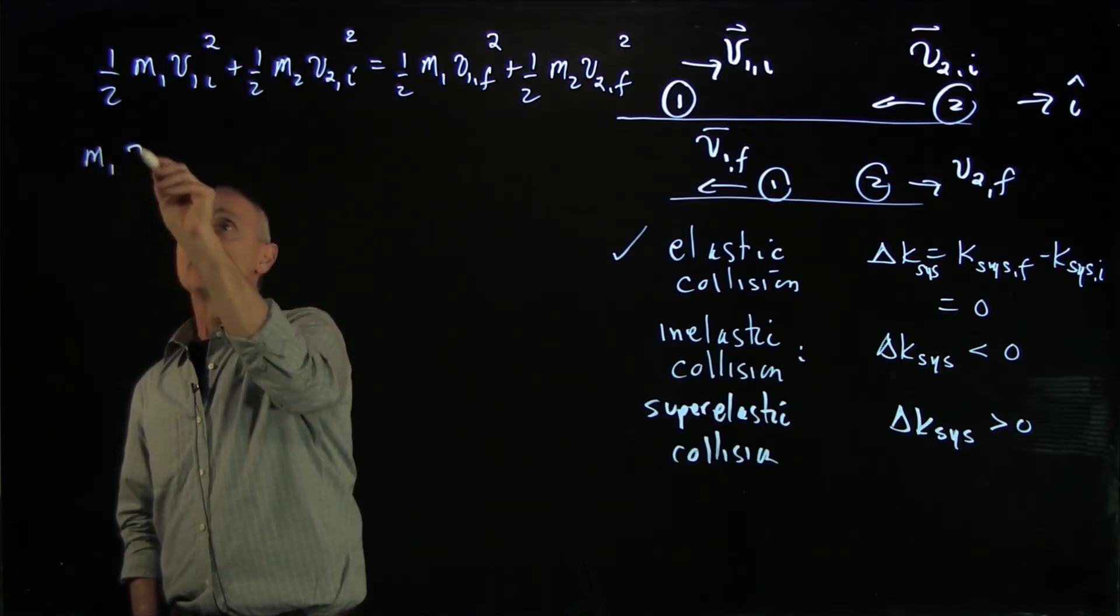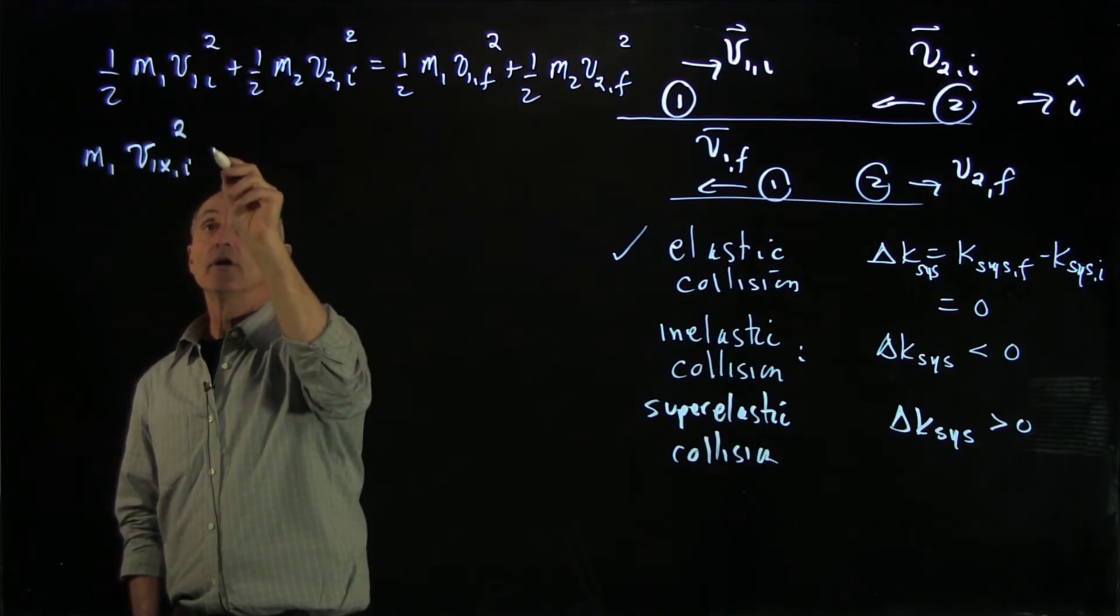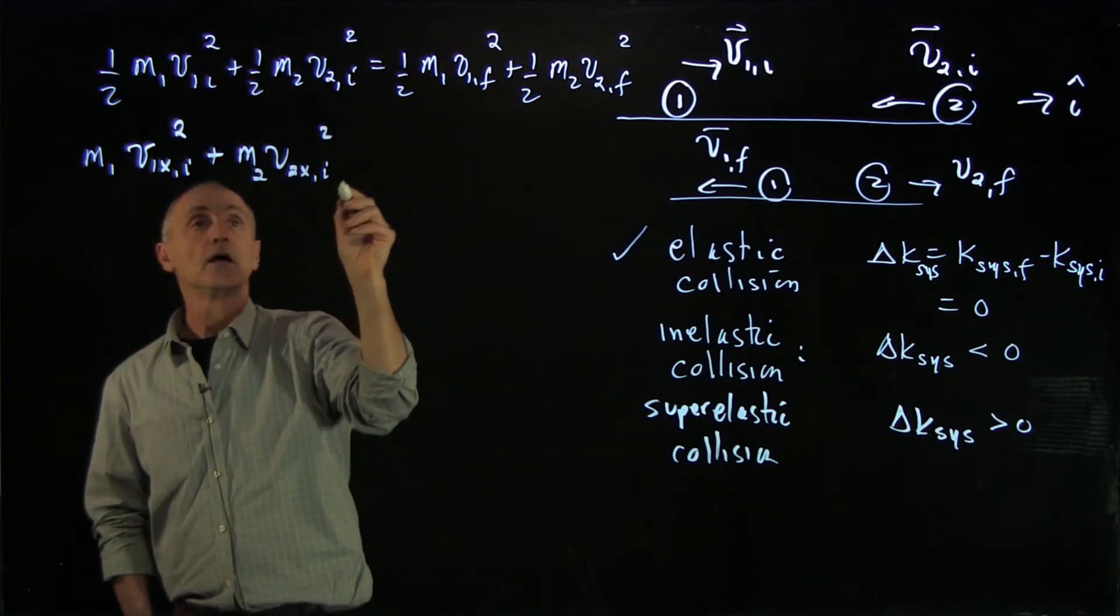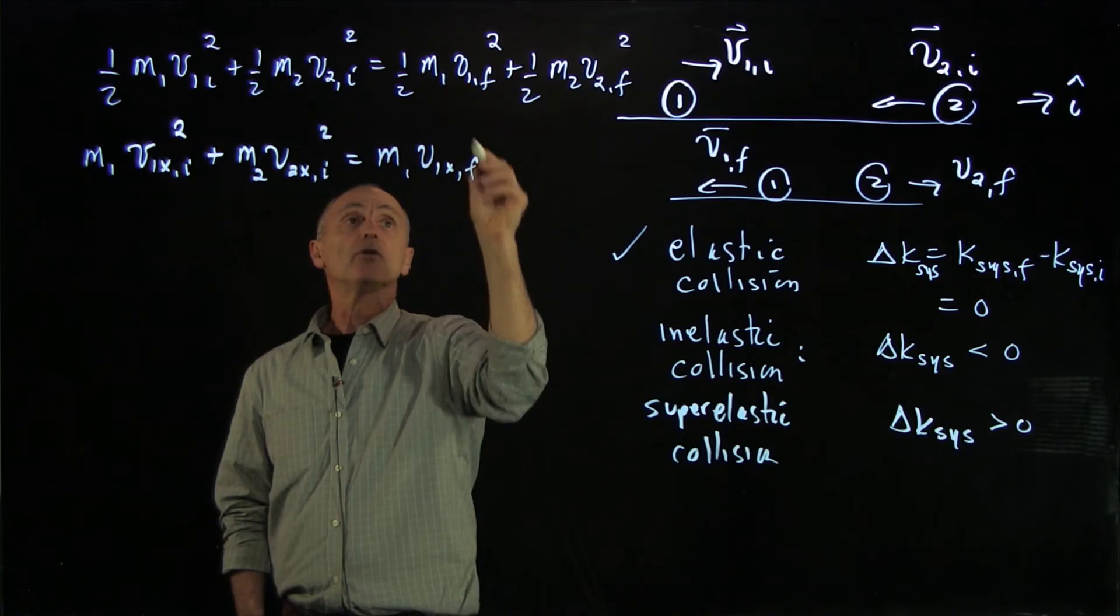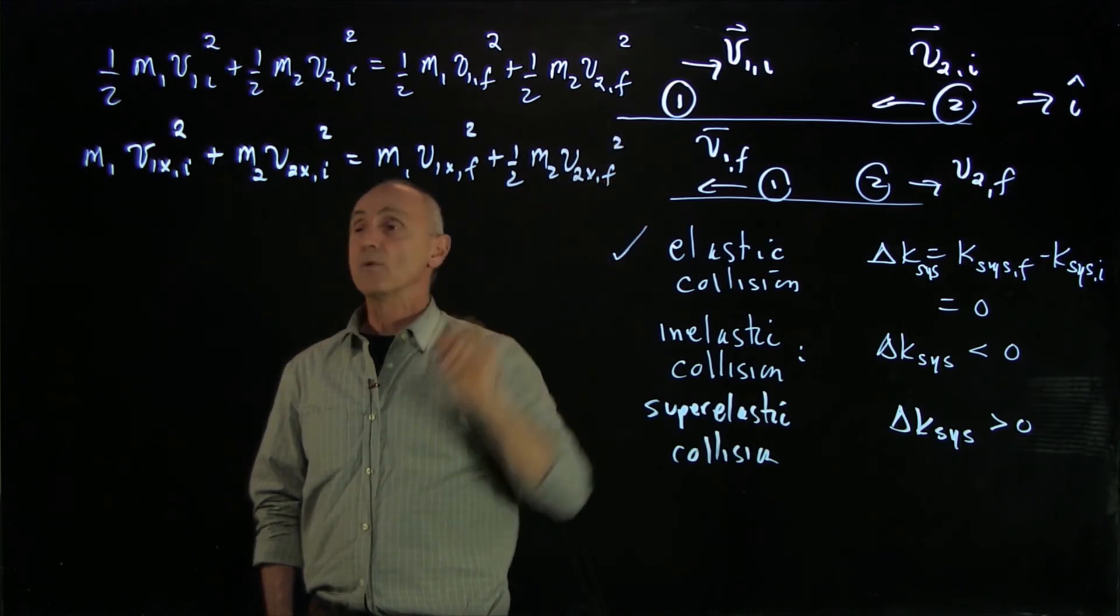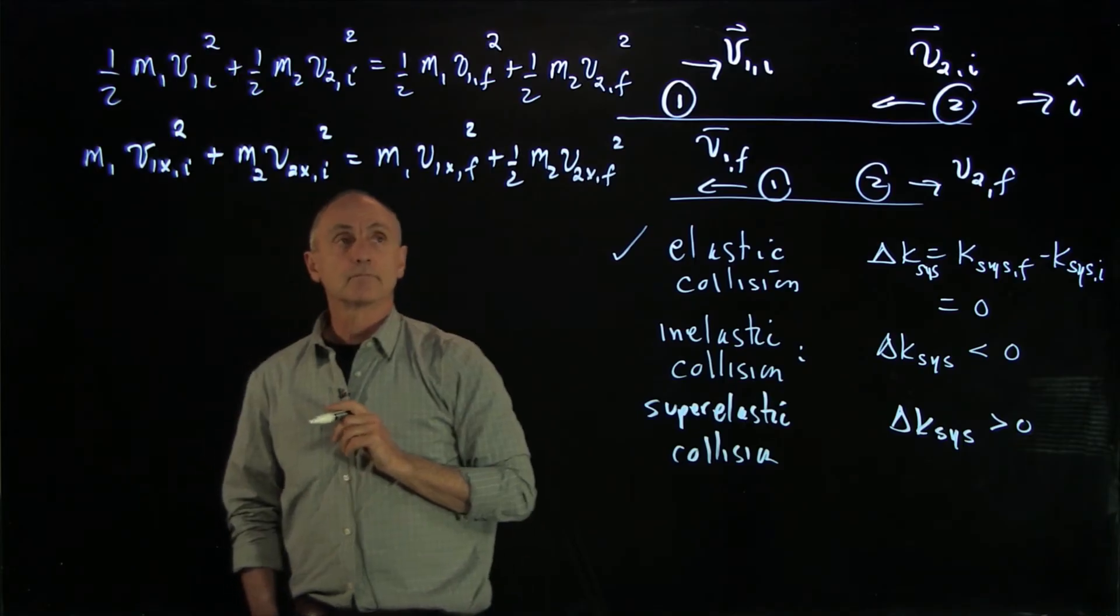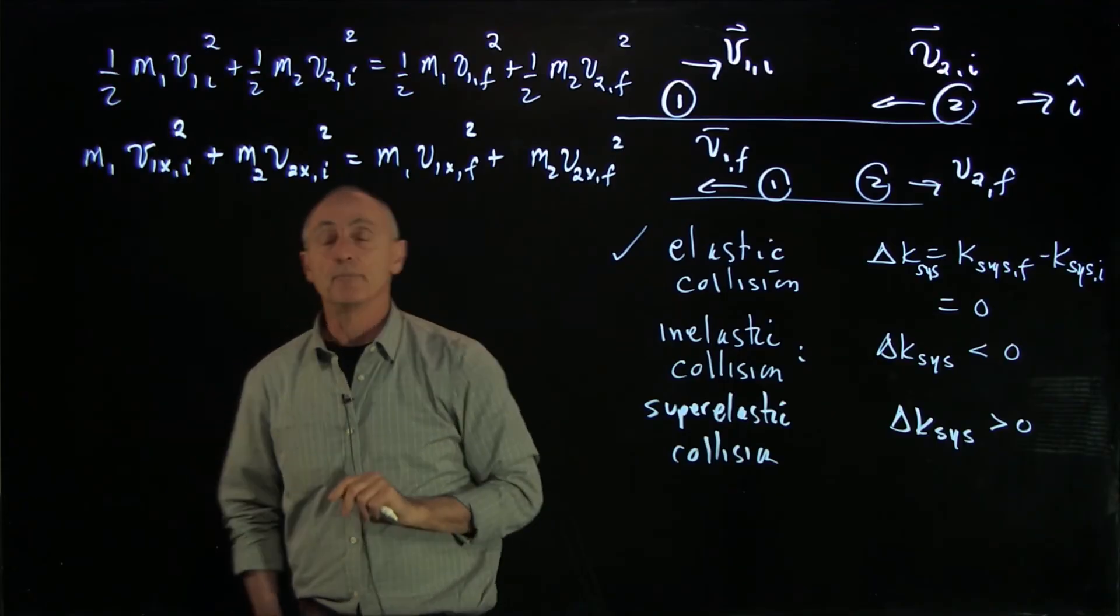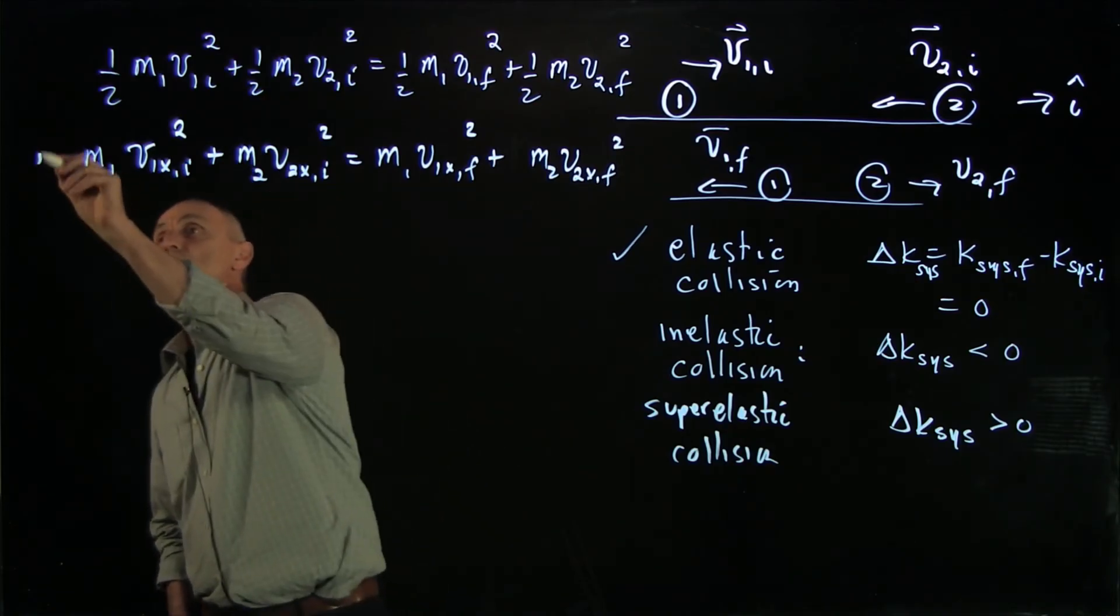We write m₁v₁ₓ² initial plus m₂v₂ₓ² initial equals m₁v₁ₓ² final plus m₂v₂ₓ² final. We've already canceled all the halves. We'll call this equation 1.